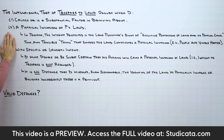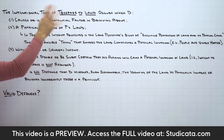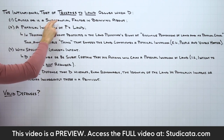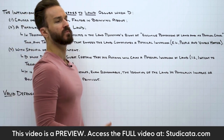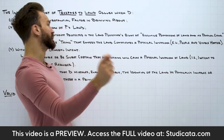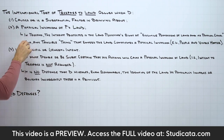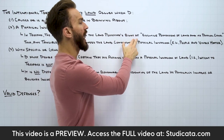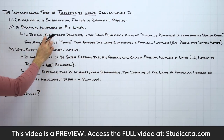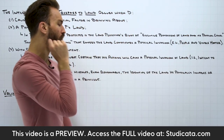Starting with our second element — the voluntary act requirement — which is this idea of physical invasion: what do we mean here? To hold the defendant liable, the intentional tort of trespass to land occurs when the defendant causes or is a substantial factor in bringing about a physical invasion of the plaintiff's land. In trespass, the interest protected is the land possessor's right of exclusive possession of land and its physical condition. This comes from the Second Restatement of Torts.